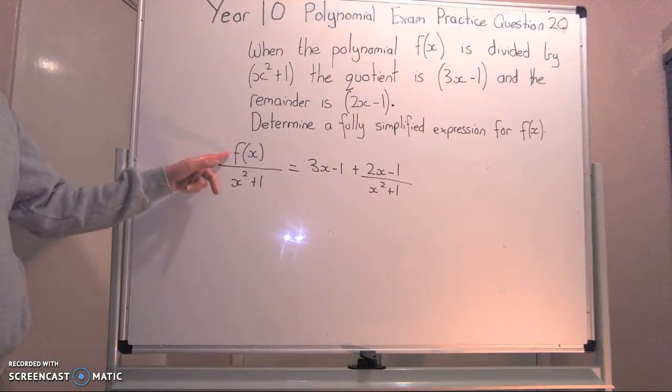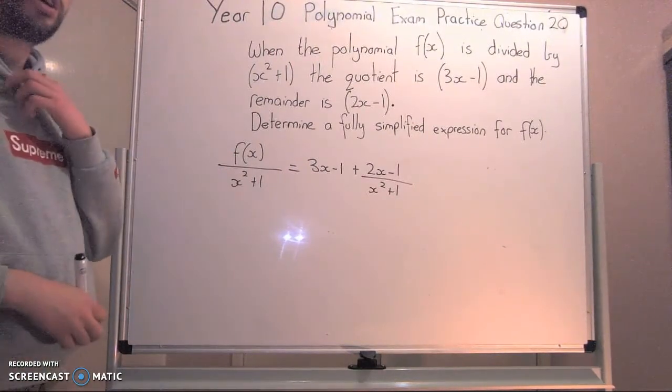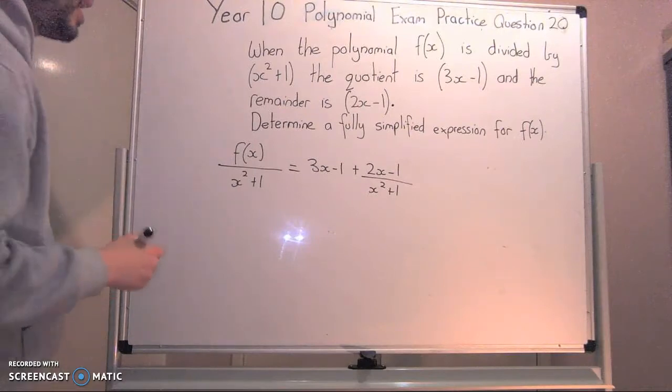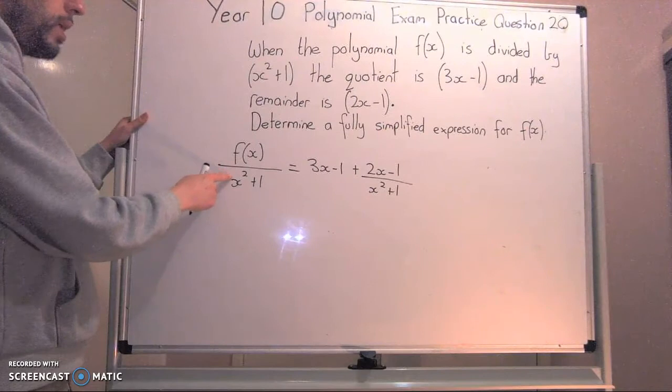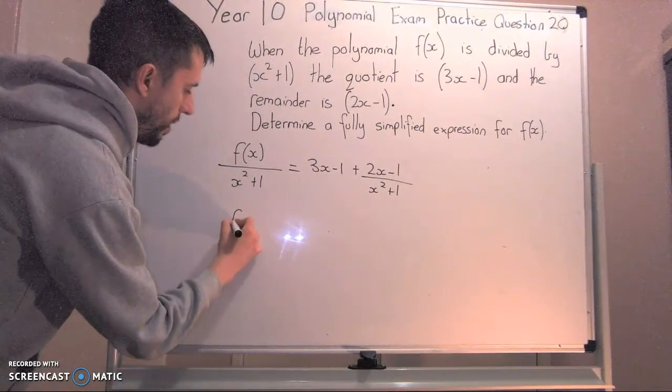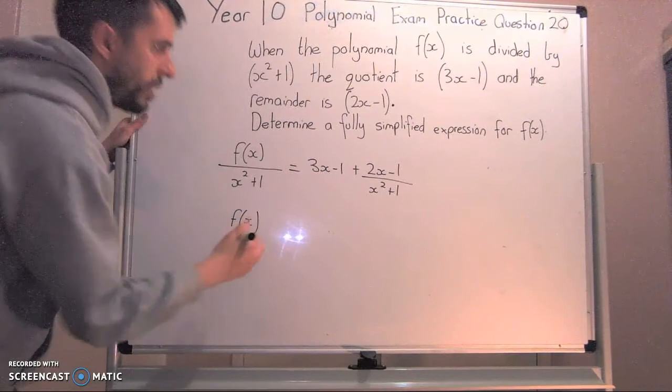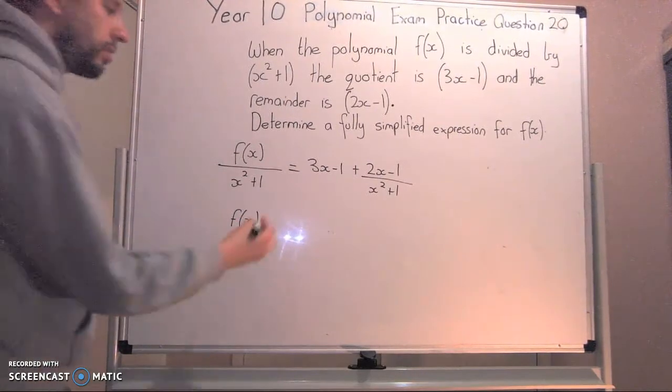I want to work out what the function of x is. To do that, the first thing I need to do is get rid of divided by x squared plus 1. So I times both sides by x squared plus 1. That gives me the function of x on this side.